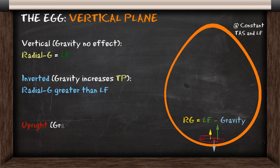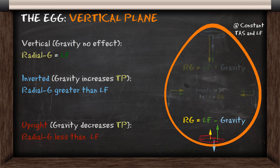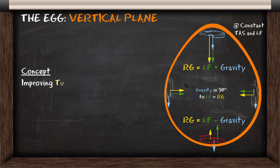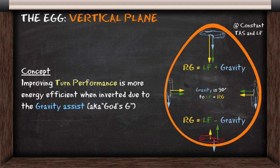If you're upright, gravity will reduce your turn performance, and radial G is less than the load factor, which will result in a slower turn rate and a higher turn radius. The concept to think about here is that if you want to improve turn performance, it's more energy efficient when you're inverted, because you have gravity assisting you.